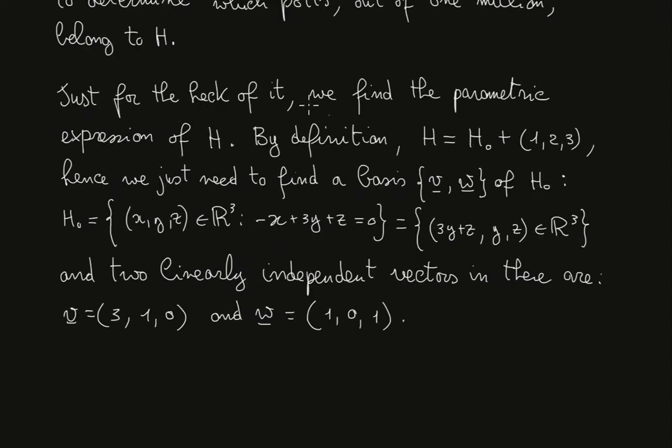Just for the hack of it, we find the parametric expression of H. By definition, H is going to be equal to H₀ plus the translation vector, which is any vector that belongs to the plane. In this case, we have provided one of them, namely, the vector (1, 2, 3).